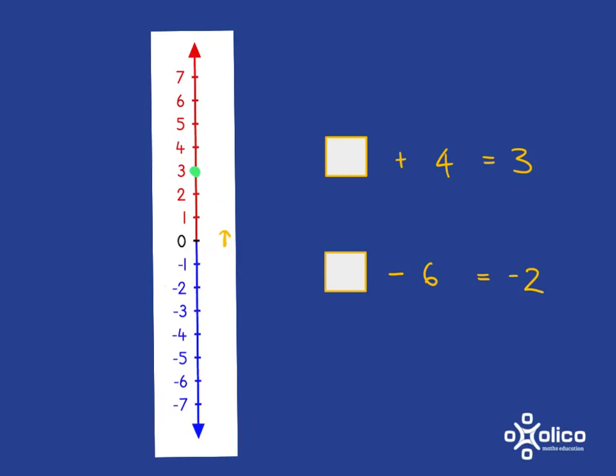So, let's go back down 4 steps. So, that is 3 steps, and 1 more step. That's 4 steps. So, I must have started at negative 1.